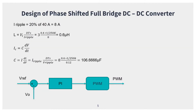The current ripple is 20% of the load current = 8 A. So L = V_L × d×Ts / I_ripple = 3 × 0.4 × (1/250k) / 8 = 0.6 µH.